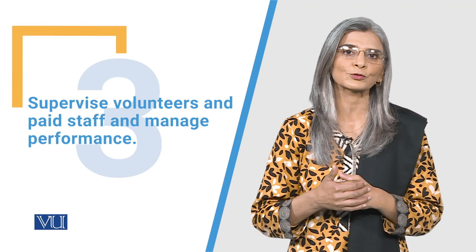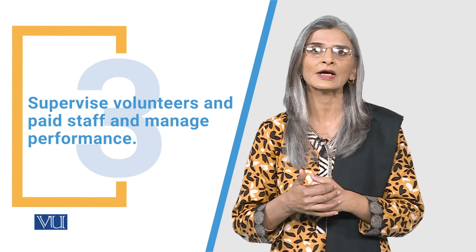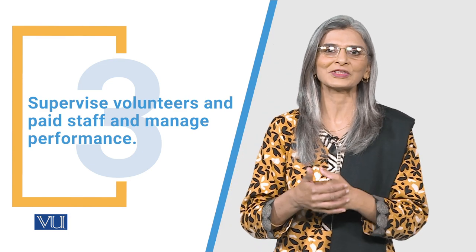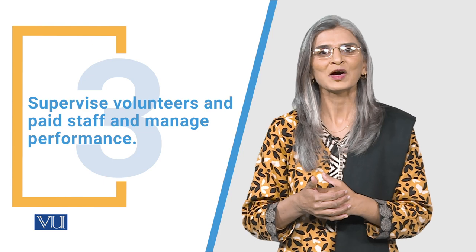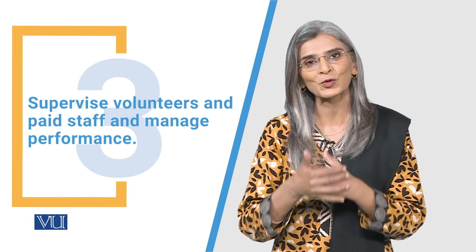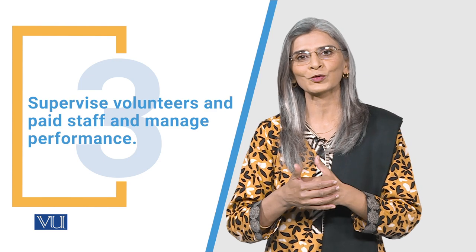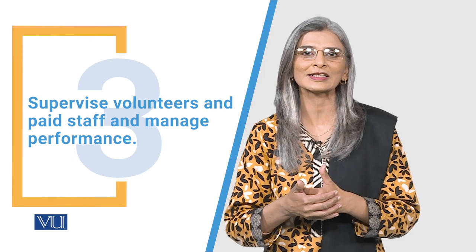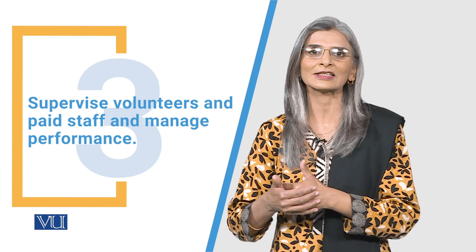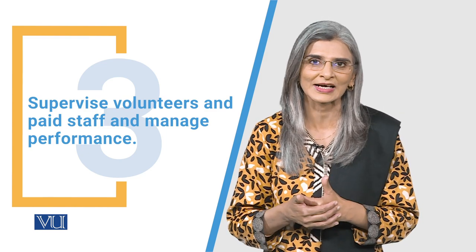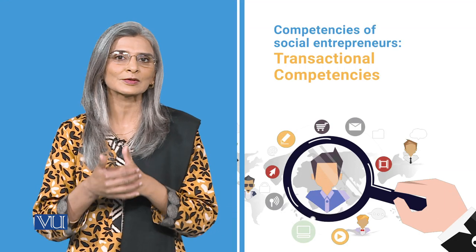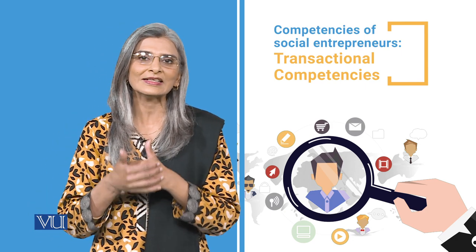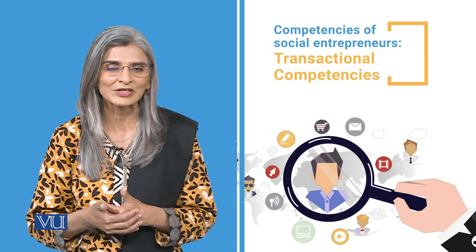تیسرا set of competencies جو social entrepreneur کو transactional terms میں چاہیے وہ supervision ہے۔ Supervision سے مراد یہ نہیں کہ وہ bossing around کرے۔ بلکہ یہاں supervision سے مراد mentoring اور coaching ہے — لوگوں کی performance دیکھ کر evaluate کر کے، جہاں کمی ہو identify کر کے، اگر ضرورت ہو training opportunities دی جائیں، ورنہ mentoring کے ذریعے کام بہتر بنایا جائے۔ Supervision میں صرف weaknesses identify کرنا نہیں بلکہ لوگوں کی strengths کو recognize کرنا بھی شامل ہے۔